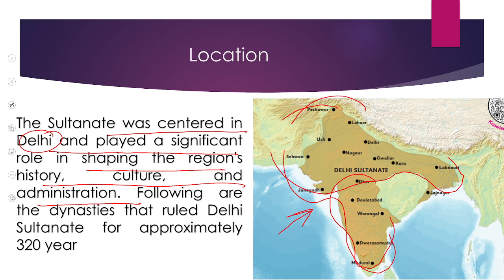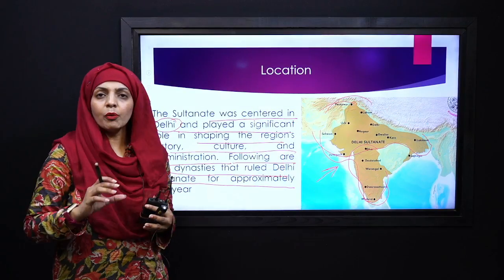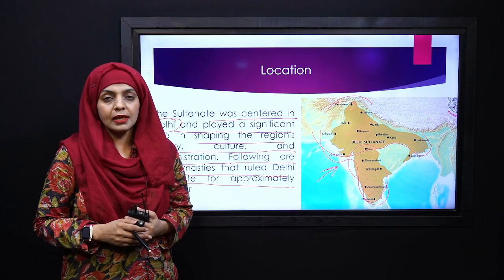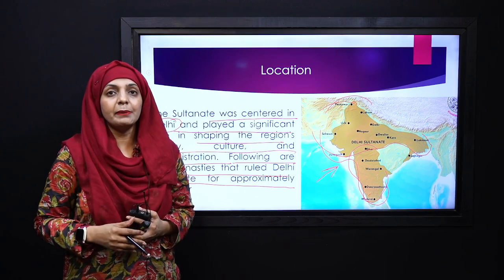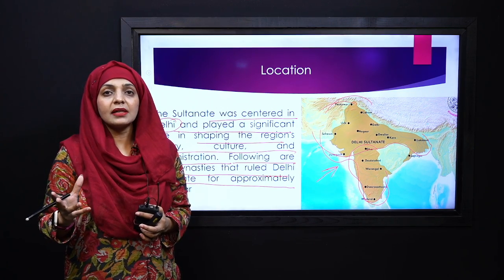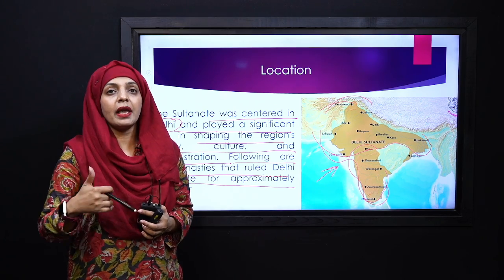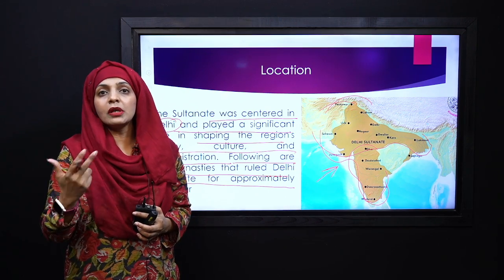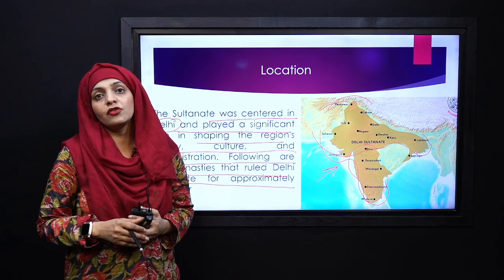The Sultanate played a significant role in shaping the region's history, culture and administration, particularly following the Muslim rule aur joh Muslim culture hai usko apnaate huye. Following are the dynasties that ruled Delhi Sultanate for approximately 320 years. Chote chote adwaar mein muktelif dynasties iske andar aayin, leken phir bhi isko ek tariqe se golden age bhi keh saktay hain, kyunke ismein baqaida taur pe ek Islamic governance system, political system, aur muktelif reforms is area mein introduce karwaye gaye.